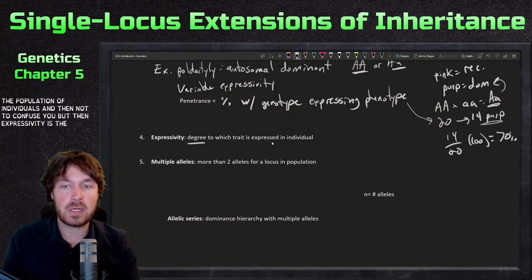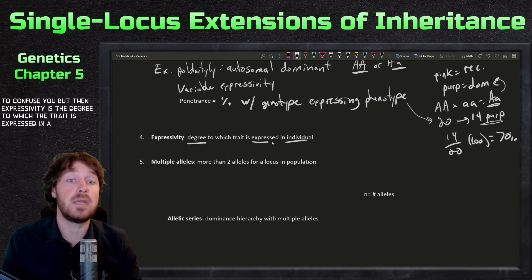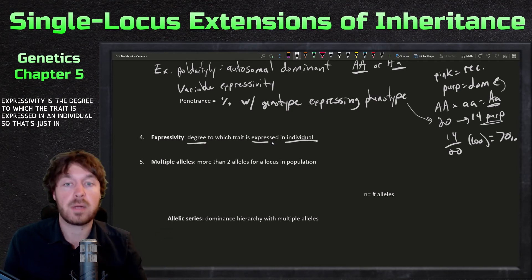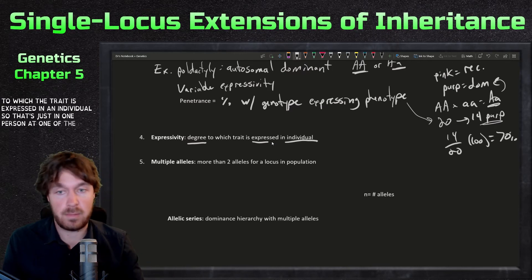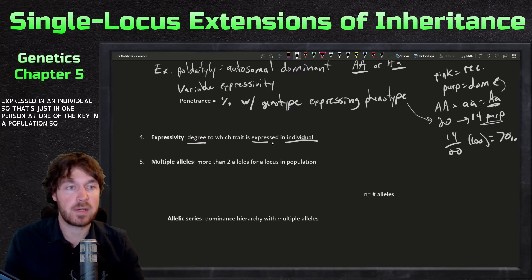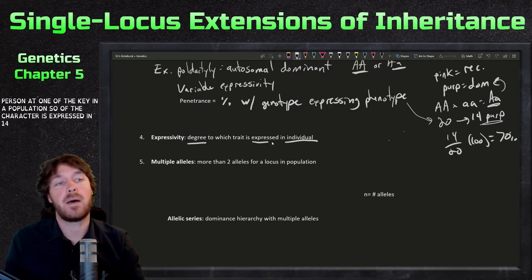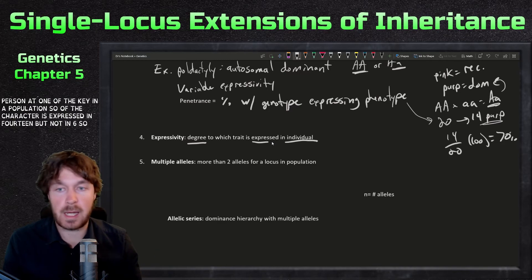Not to confuse things, but expressivity is the degree to which a trait is expressed in an individual. In this example, the expressivity of the character is expressed in 14 individuals but not in six.